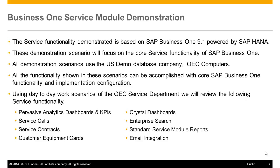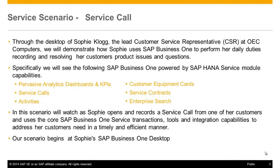In the following two role-based scenarios, we will review the following Business One service module functionality: pervasive analytics dashboards and KPIs or key performance indicators, Crystal dashboards, service call functionality, enterprise search, service contracts, standard service module reports, and customer equipment cards. Through the desktop of Sophie Clog, the lead customer service representative CSR at OEC Computers, we will see SAP Business One powered by SAP HANA service module capabilities including pervasive analytics and dashboards, customer equipment cards, service calls, service contracts, and activities.